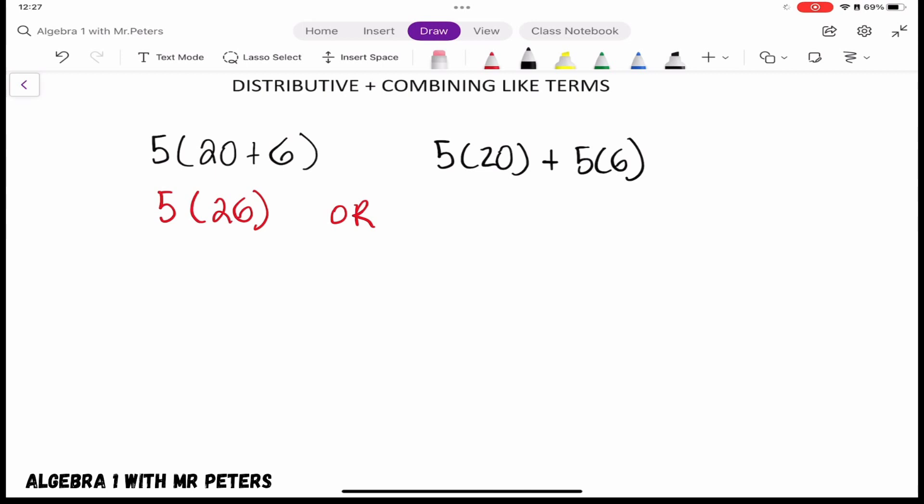But what we're going to notice is that we're going to have the same answer no matter what, and this is what I mean. When we do 5 times 26, our answer is 130. And I look here